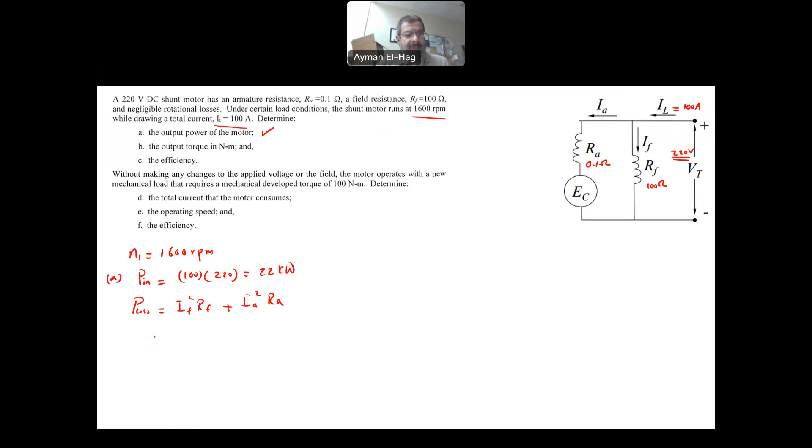So we need to find IF. Your IF is the voltage divided by the resistance, which is the 220 volt divided by the 100 ohm, and this will give me 2.2 amps. And from this, I can find my IA, which is basically the 100 amp, the main current minus 2.2, just simple KCL. And this will give me current equal to 97.8 amps.